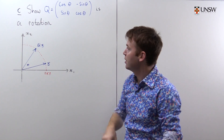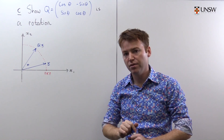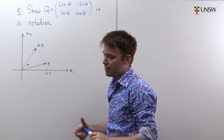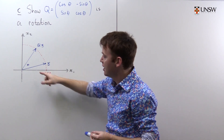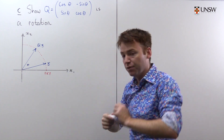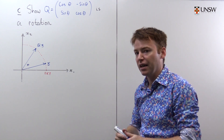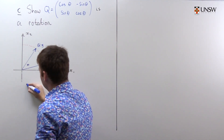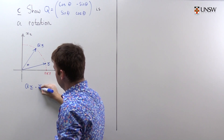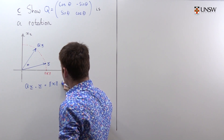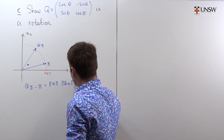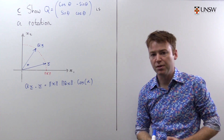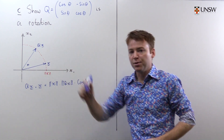Now in part C we're going to show that this orthogonal matrix is a rotation matrix. I've drawn a picture with x and Qx, and we're interested in the angle α between the two vectors. Fortunately we have a formula for the cosine of the angle between two vectors: Qx dotted with x equals ‖x‖ · ‖Qx‖ · cos α. This is what we will use to connect orthogonal matrices to the angle between vectors.